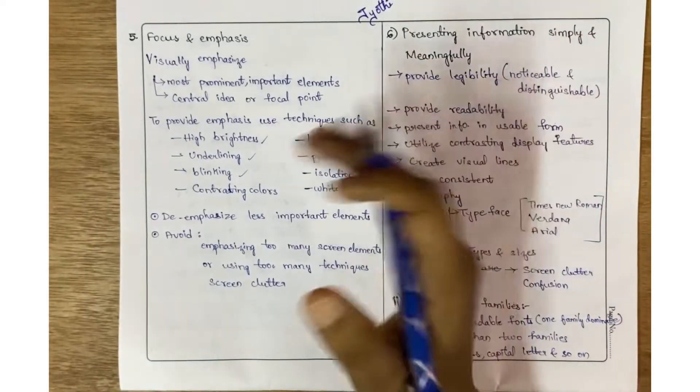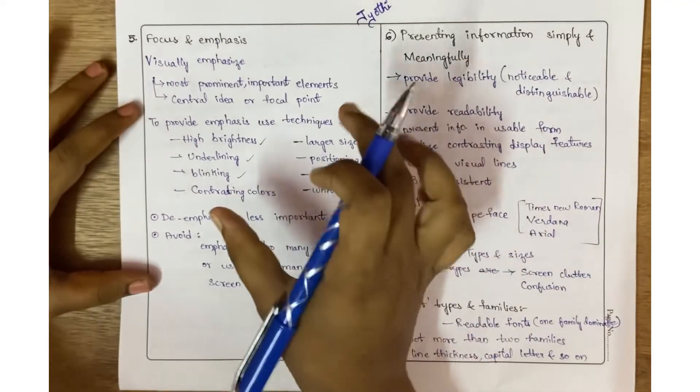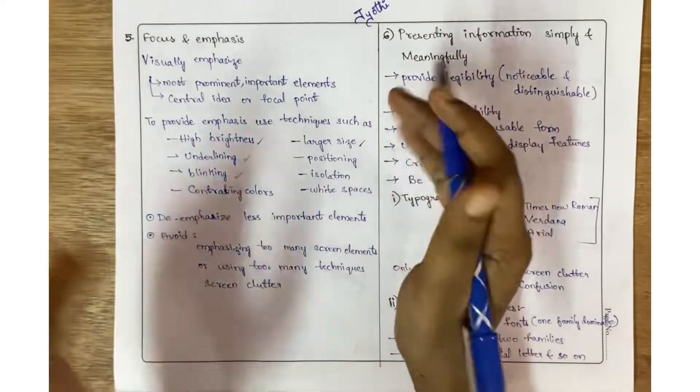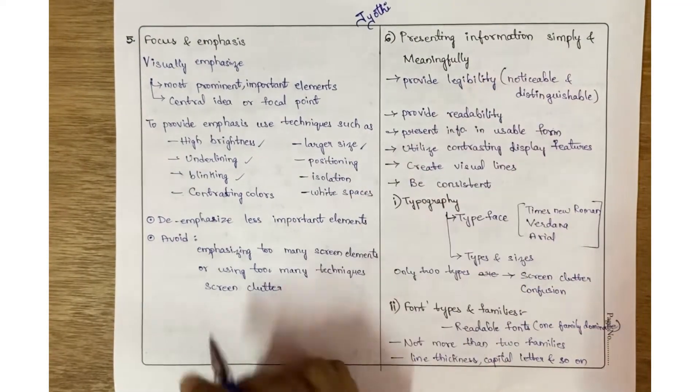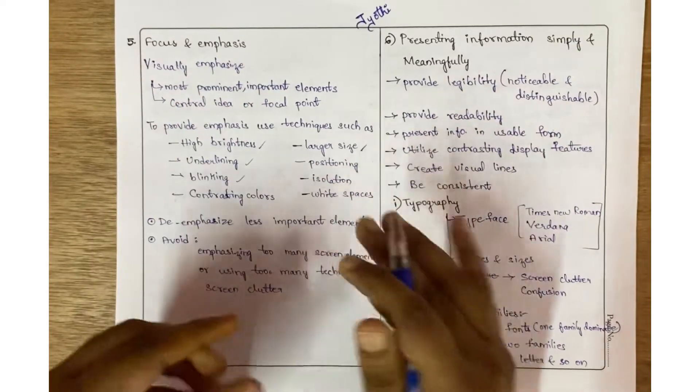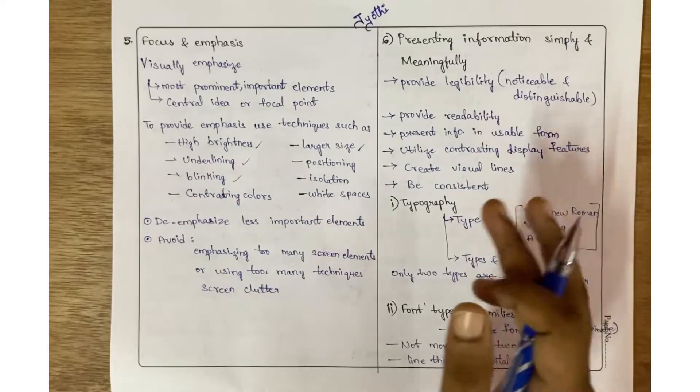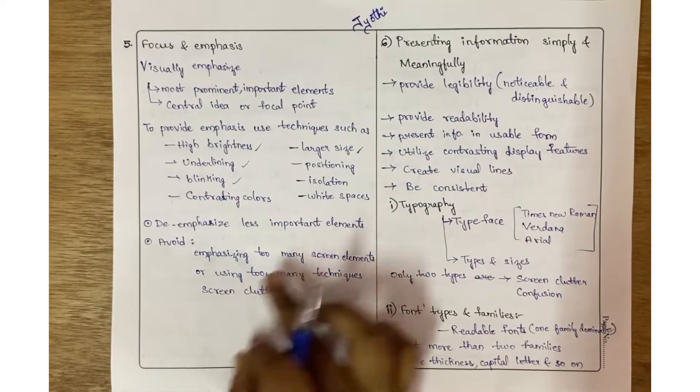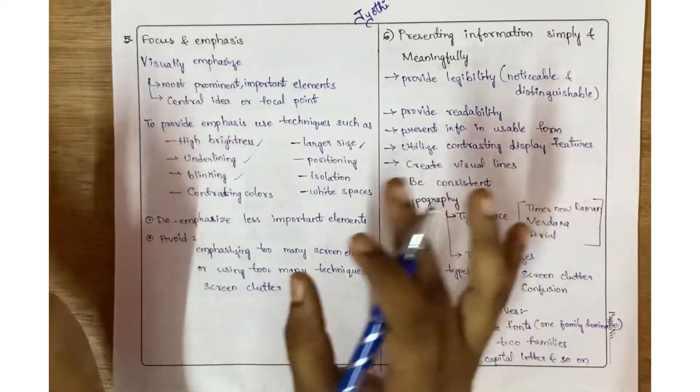Another important thing is that less important elements must be de-emphasized. We need to avoid emphasizing too many screen elements, because if you're emphasizing everything, they may get confused about what is important. Also avoid screen clutter and don't use too many techniques.